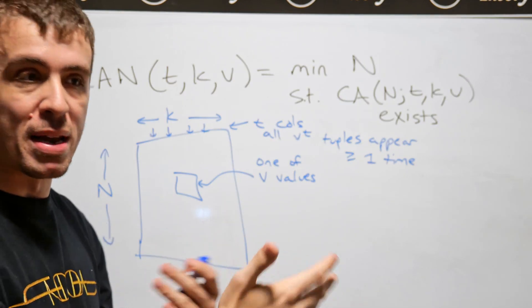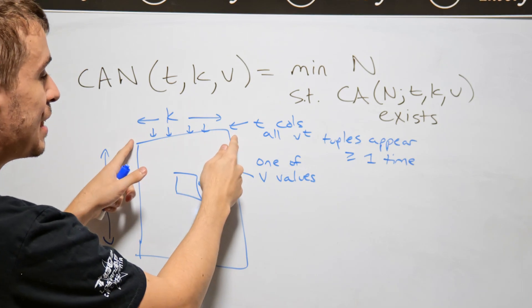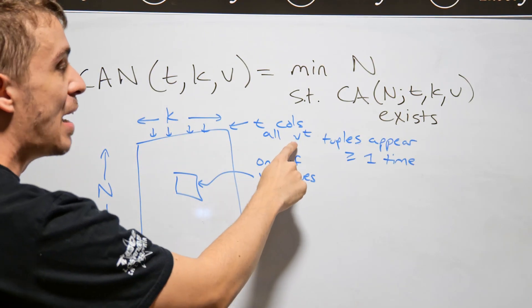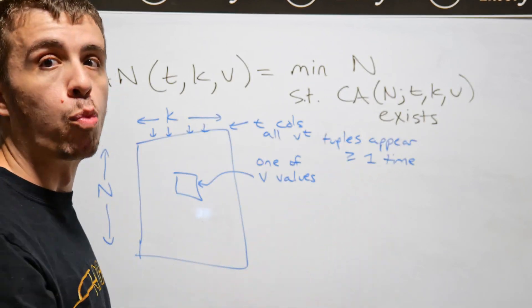So if v is 2, that would be a 0 or a 1 in every single position. And what this t parameter says is that no matter what t columns you pick, you will have every single v to the t tuple appear at least once.